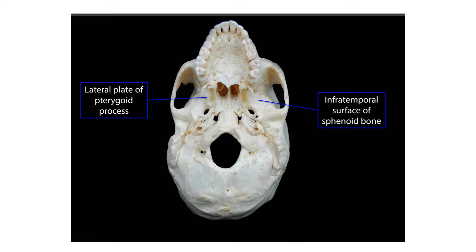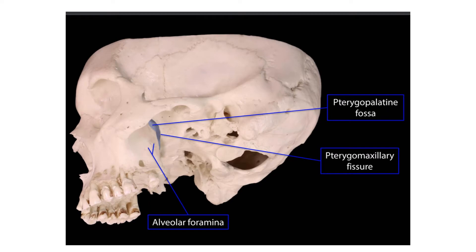Moving on to the medial wall. The medial wall of the infratemporal fossa is formed by the lateral surface of the lateral pterygoid plate. This is the lateral pterygoid plate — its outer or lateral surface acts as the medial boundary or medial wall.